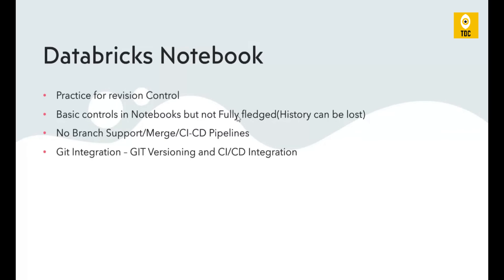To make it a fully fledged Git-like feature, Databricks needs support from an external GitHub repository. There are different options: you can use enterprise Git, Azure DevOps, GitLab, or Bitbucket. With GitHub integration, it supports branching, merging of code, and most importantly CI/CD pipelines — continuous integration and development.